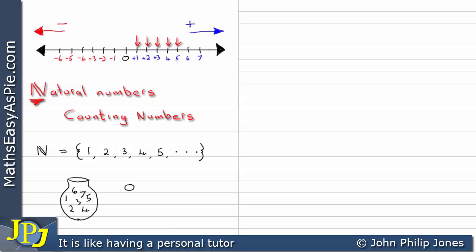Let's consider whether zero, 1.5, minus 1, and 3.75 are natural numbers — in other words, do they belong in this container, in this bag? Well, zero doesn't. 1.5 doesn't. Minus 1 doesn't. Minus 3.75 doesn't. So we can see clearly what natural numbers are.